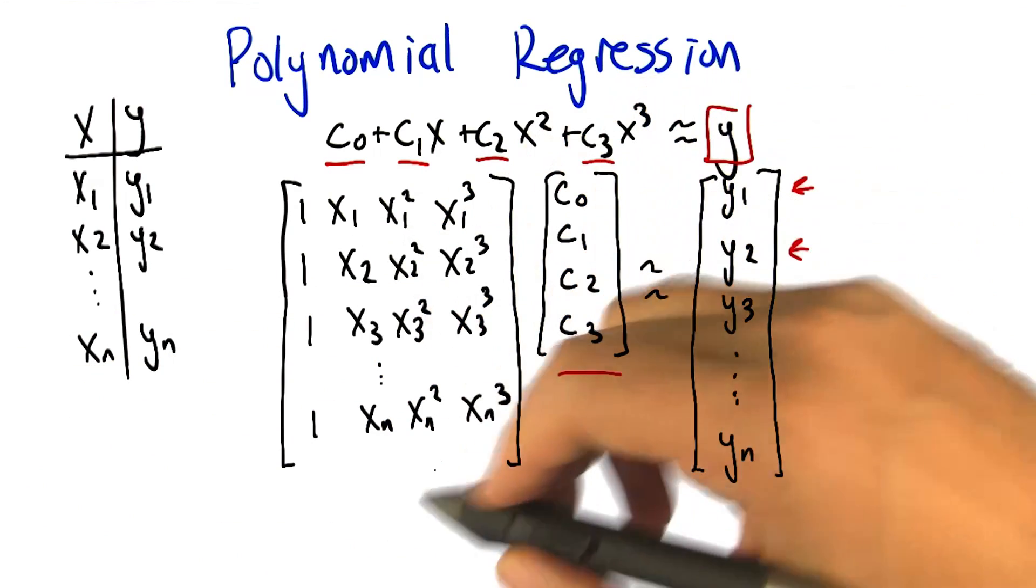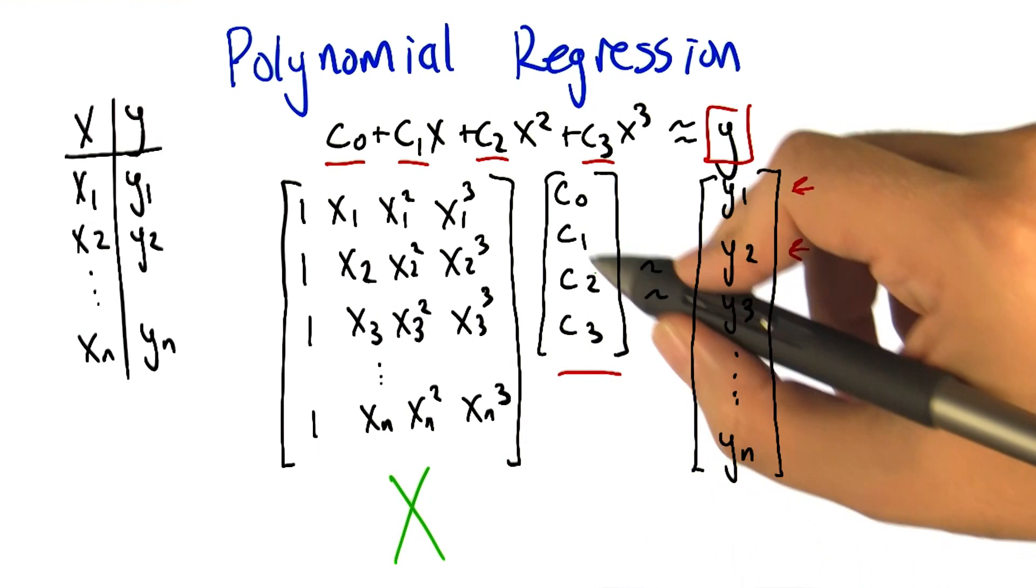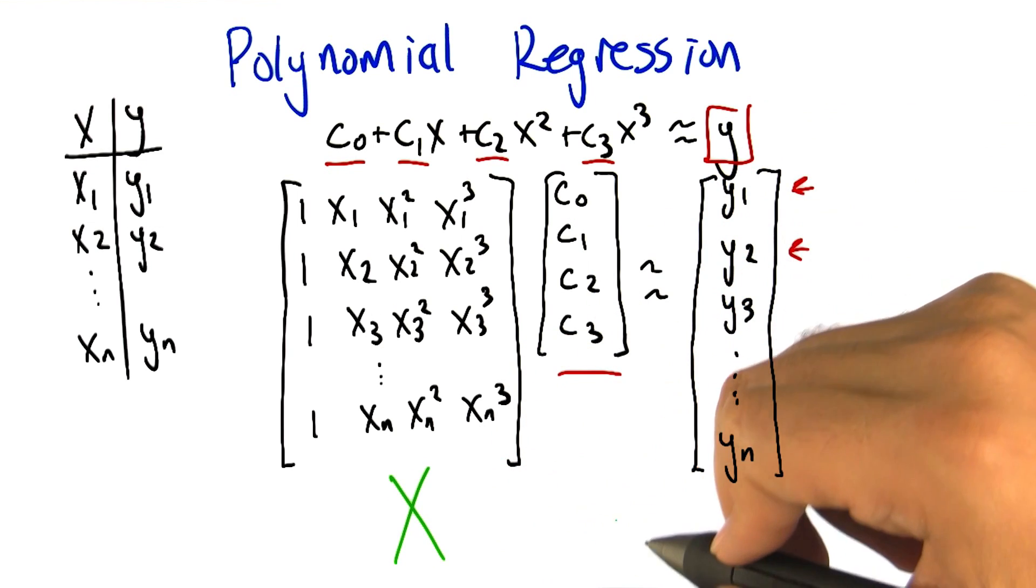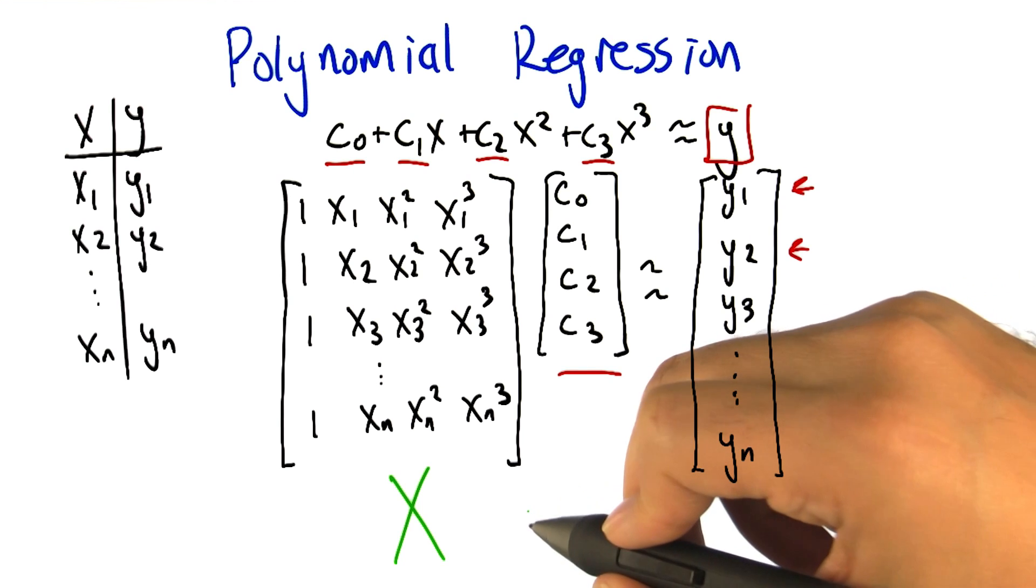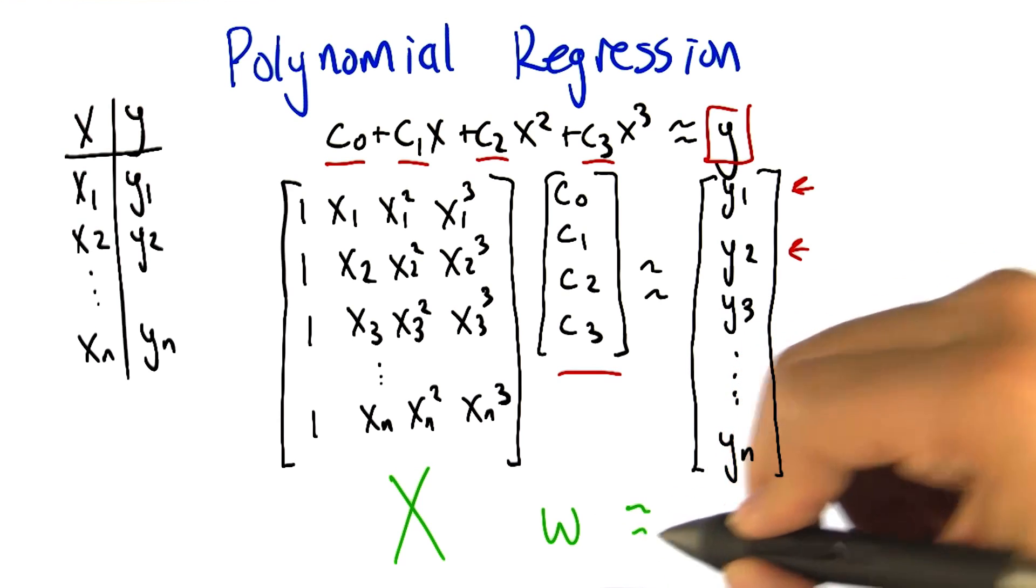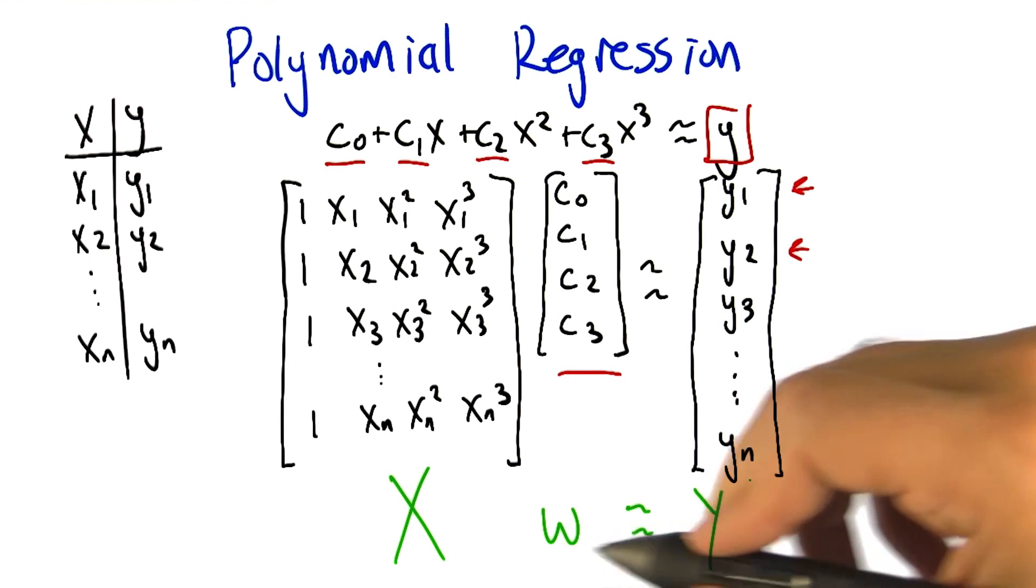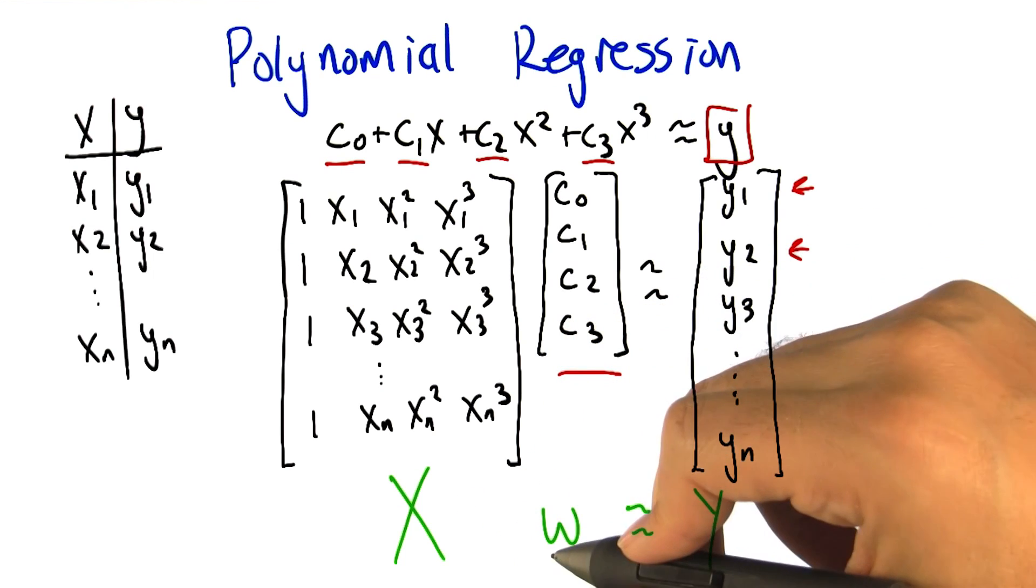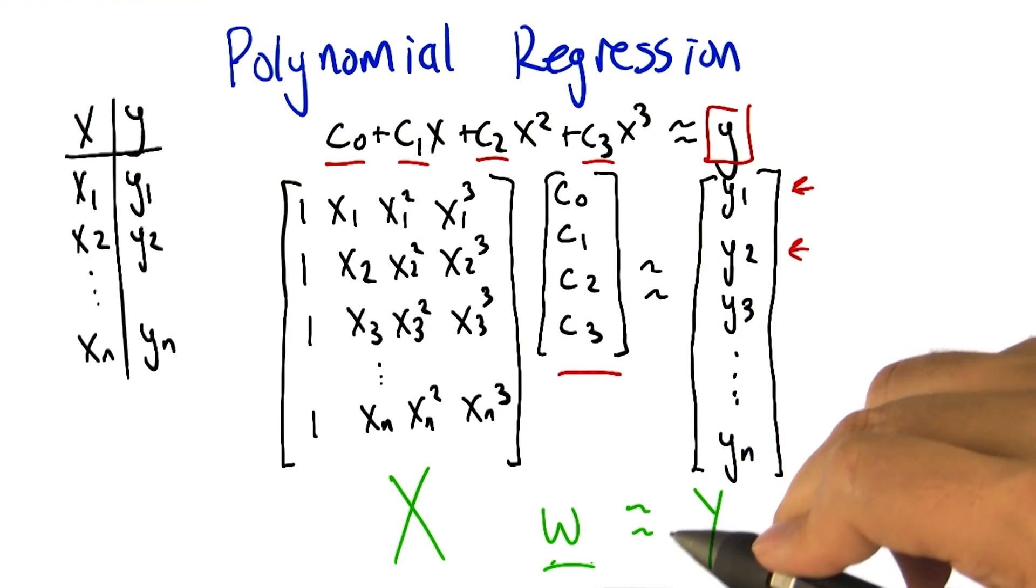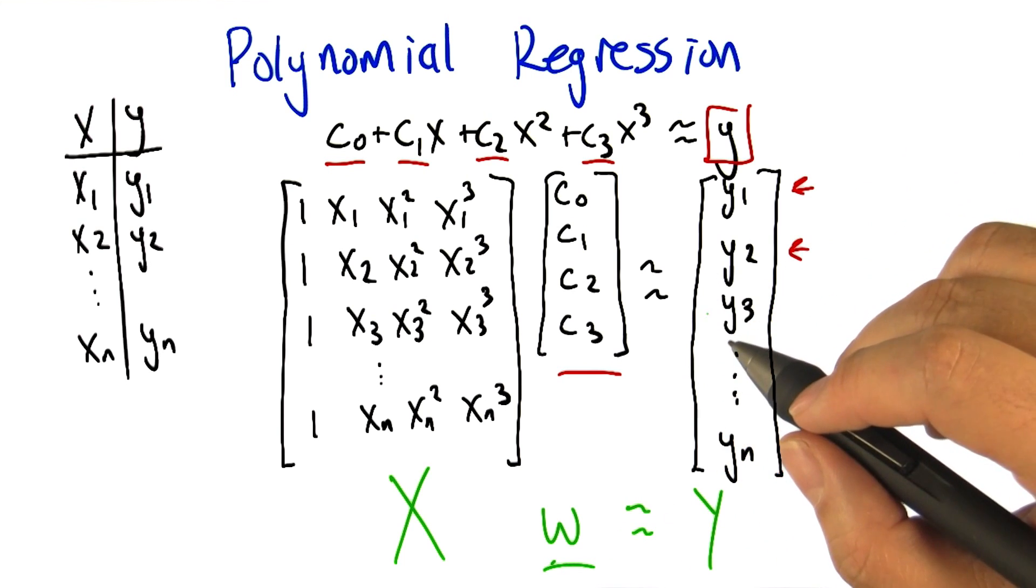So if we arrange all these x values into a matrix and we'll call it x, and then we have these other guys and we'll call this w, like the coefficients. Obviously w stands for coefficients. And we want that to sort of equal this vector of y's. And we basically just need to solve this equation for the w's. Now we can't exactly solve it because it's not going to exactly equal, but we can solve it in a least squares sense.